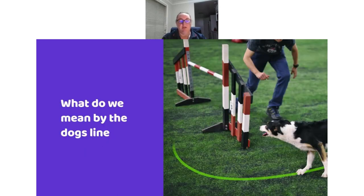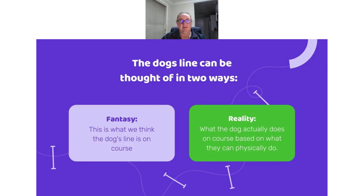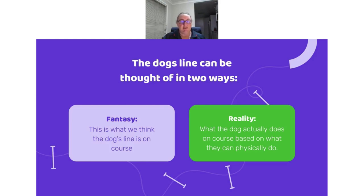So what do we mean by the dog's line? The dog's line can be thought of in two ways. We think of it in terms of fantasy land — how we think the dog can take the obstacles — because we tend not to think too much into the physics of how they're doing it. We just think they're going to jump the jump and follow us. Sometimes we think a little too much in fantasy land about how well dogs can turn and how tightly they can turn. Then there is the reality of what actually happens on course. Until you film yourself running your dogs and have a look at how your dogs really turn, how big a takeoff point they have, all the factors that go into how the dog sees the jump, takes the jump, and moves on — that's the real life of what the dog's line can be.